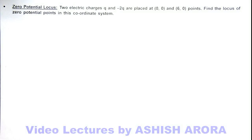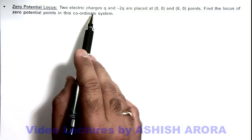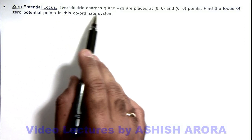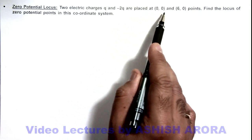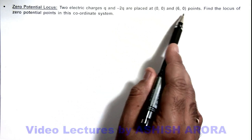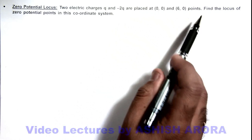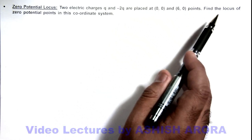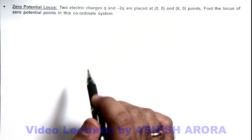In this illustration we are given a situation where we have 2 electric charges, q and minus 2q, which are placed at (0,0) and (6,0) in a given coordinate system. We are required to find the locus of zero potential points in this coordinate system.